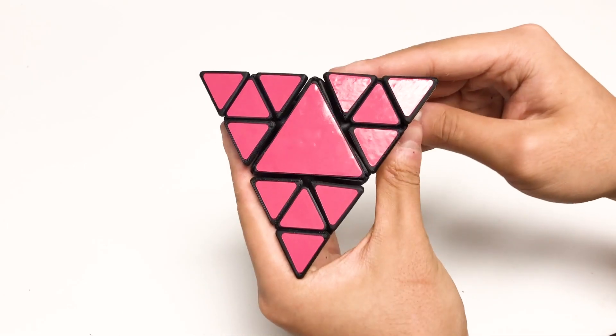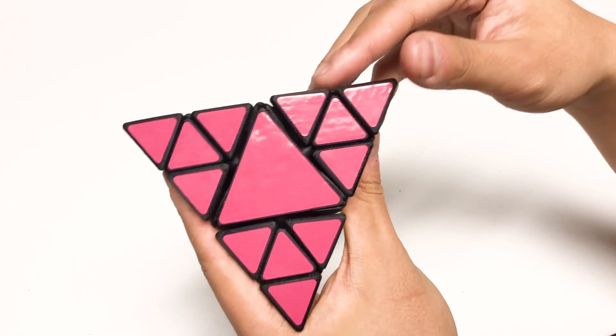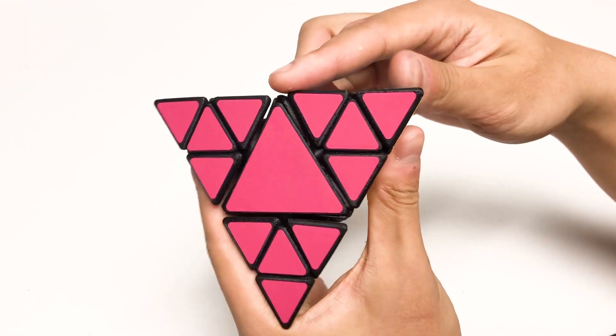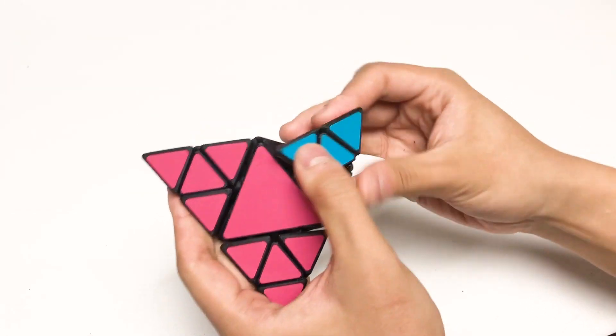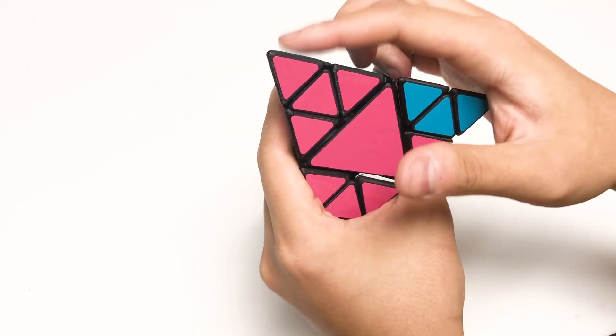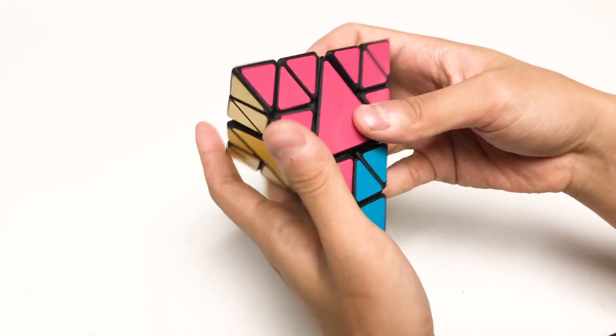But it has another set of cuts on each of the four tetrahedral corners that mirrors that main cut. So each of these corners is another pyromorphics.